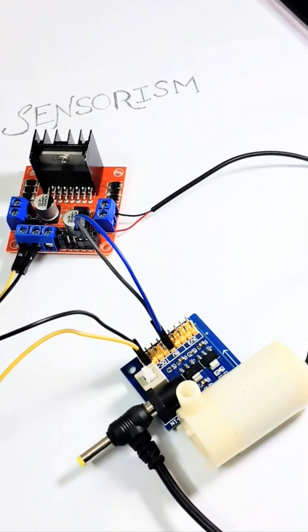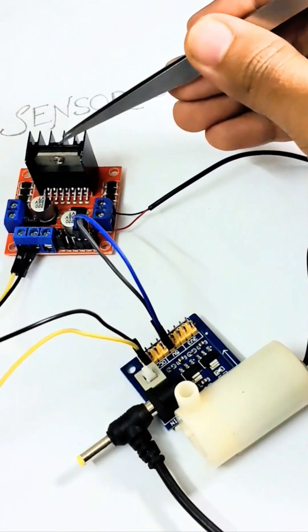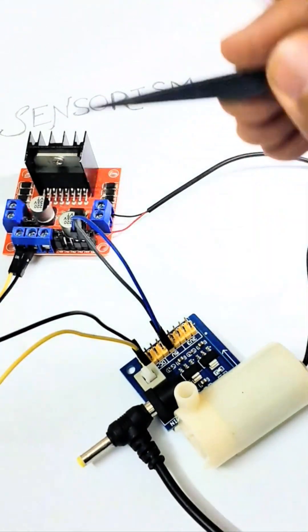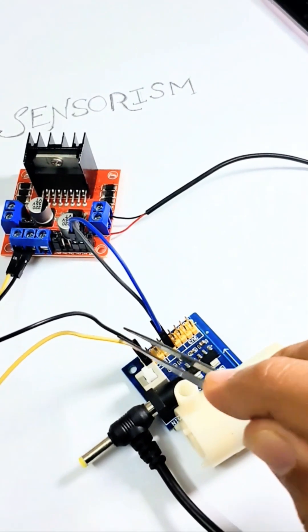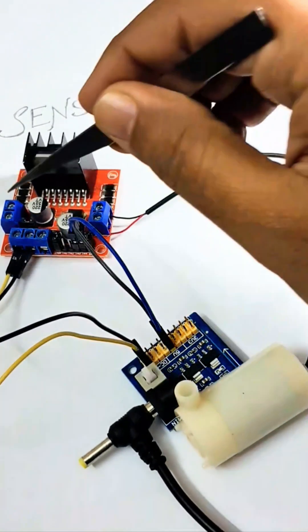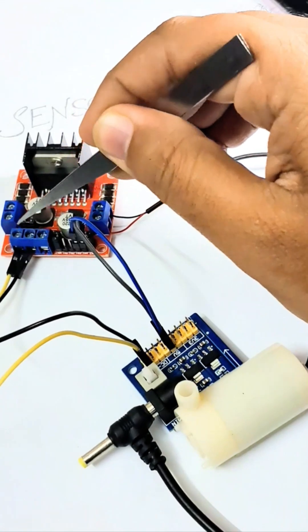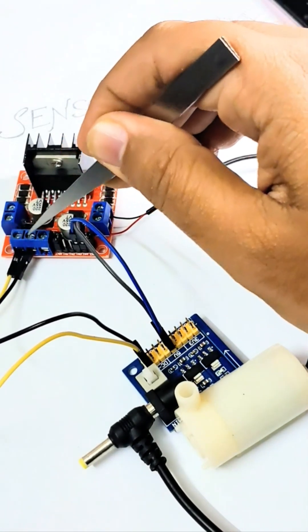Now let's test this L298N motor driver to see how it works. I have connected 12 volts from positive and ground to black wire to these two terminals. Positive goes here and ground goes here.